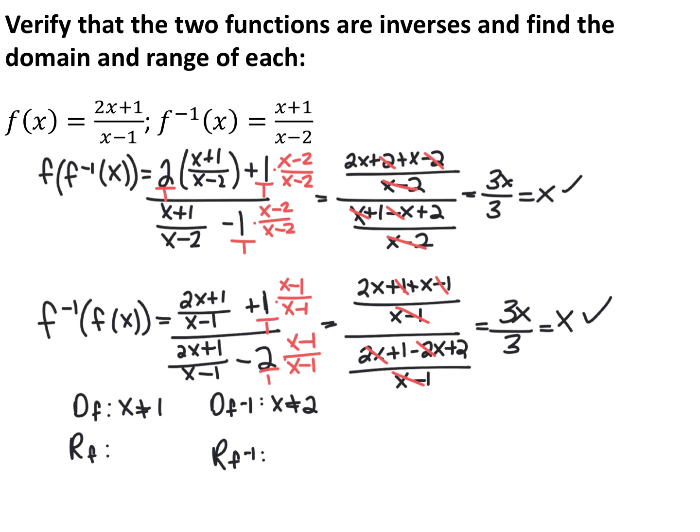Going the other direction, f⁻¹ composed with f of x: every time I see an x in the inverse function, I replace it with the whole function (2x+1)/(x−1). Again, making a common denominator, combining like terms, denominators cancel, and I end up with 3x over 3, which is x. You always have to test both directions, because sometimes you'll get x in one direction but not necessarily in the other direction.